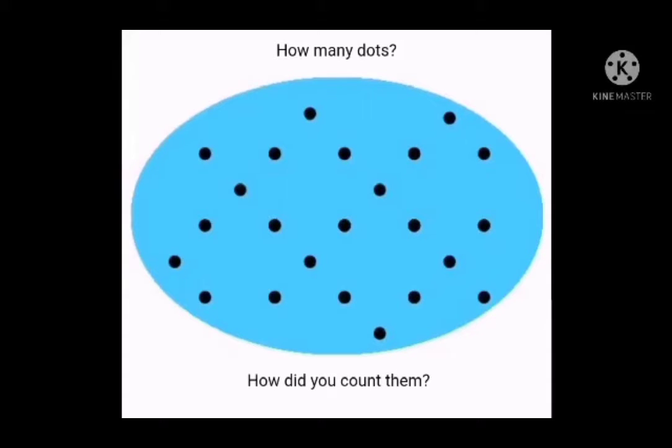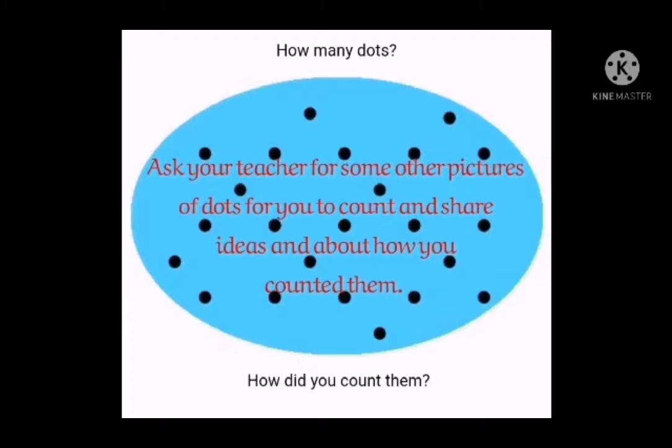Idea to try: look for problems that require little explanation to start yet are rich in thinking. For example: How many dots? How did you count them? What about your friends — how did each of them count the dots? Give students five minutes to explore the problem and see how they might get started, then discuss it together as a class. They can work out the rules through discussion together rather than you telling them, developing mathematical thinking skills as well as enabling you to talk less.